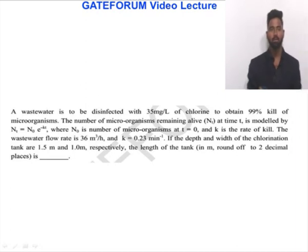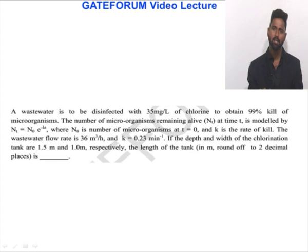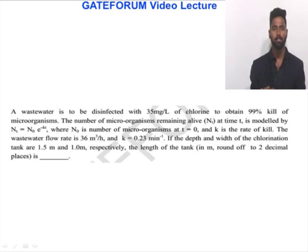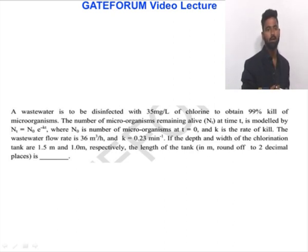A wastewater is to be disinfected with 35 milligrams per liter of chlorine to obtain 99 percent kill of microorganisms. The number of microorganisms remaining alive at any time T is modeled by NT = N₀·e^(−kT), where N₀ is the number of microorganisms at T=0 and K is the rate of kill. The wastewater flow rate is 36 meter cube per hour, K is equal to 0.23 meter inverse, and the depth and width of the chlorination tank are 1.5 meters and 1 meter respectively.